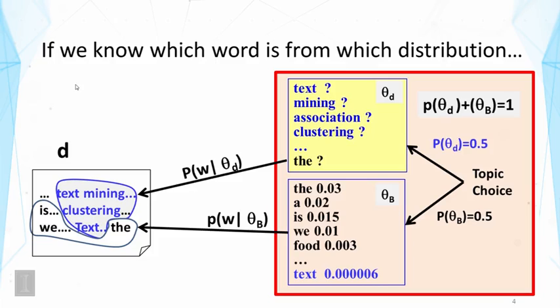If we already know how to separate these words, then the problem of estimating the word distribution would be extremely simple, right? If you think about this for a moment, you'll realize that we can simply take all these words that are known to be from this word distribution theta sub d and normalize them. So indeed, this problem would be very easy to solve if we had known which words are from which distribution precisely.